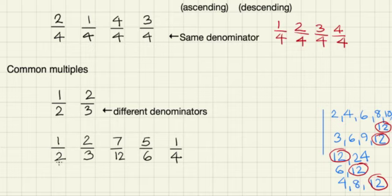So a half, in order to make 12 down at the bottom, we have to multiply 2 by 6. So 6 times 2 is 12. We multiply the bottom by 6, we've got to multiply the top by 6. So 6 ones are 6.